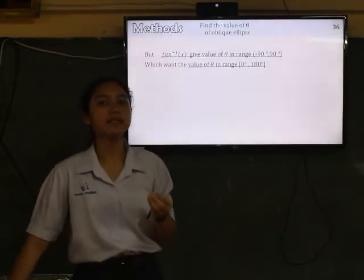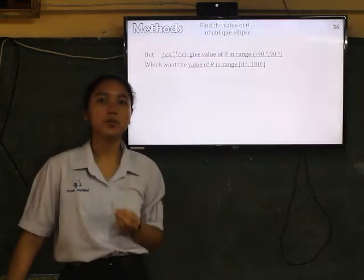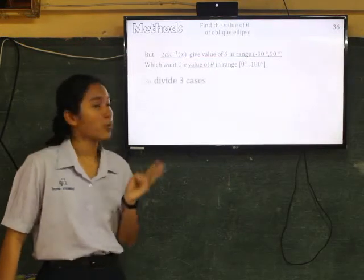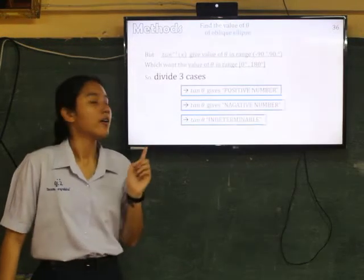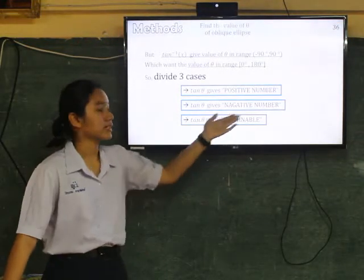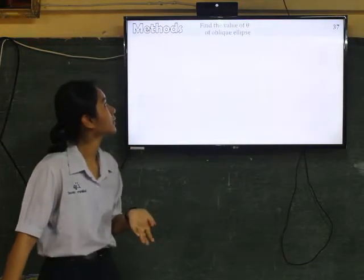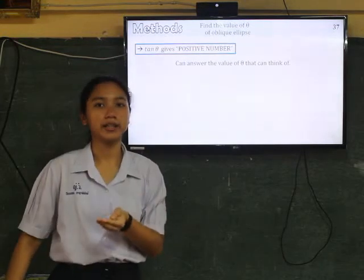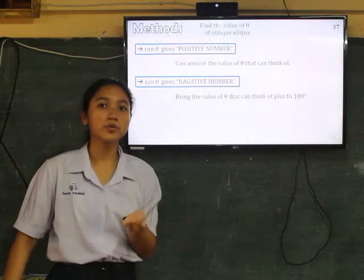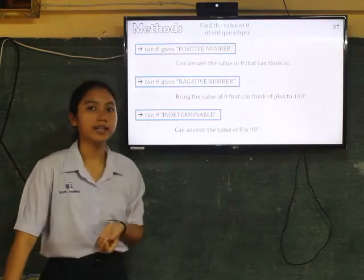But arctangent gives the value of theta between negative 90 degrees to 90 degrees. But in this project, we want the value of theta from 0 degrees to 180 degrees. So we write three cases. First is tan theta gives a positive number. Next is tan theta gives a negative number. And last, tan theta is indeterminate. For first case, tan theta, we can answer the value of theta that arctangent gives. And next case, bring the value of theta that arctangent gives plus 180 degrees. And the last case, we can answer the value of theta is 90 degrees.